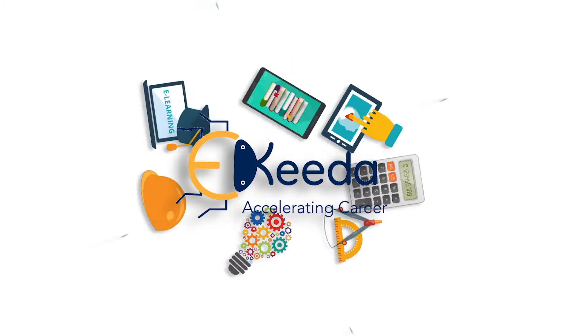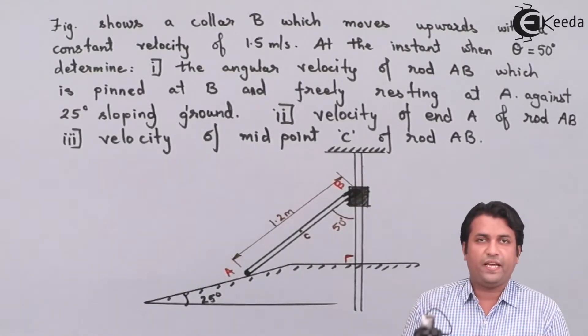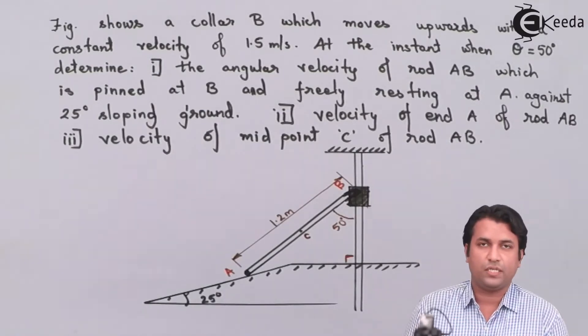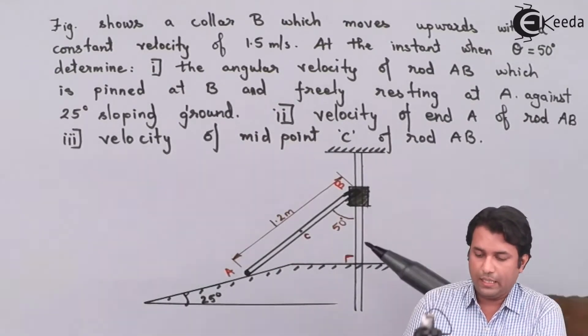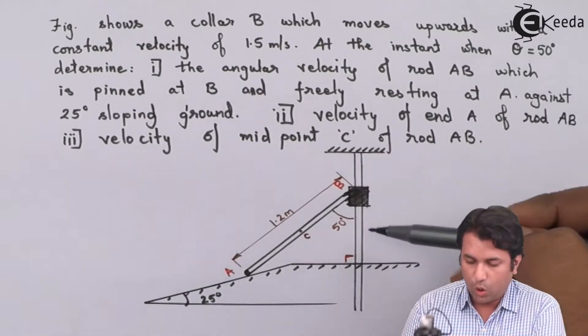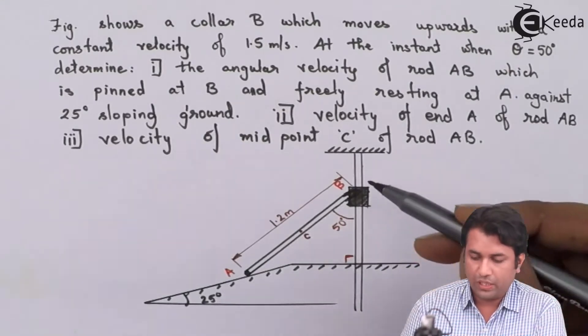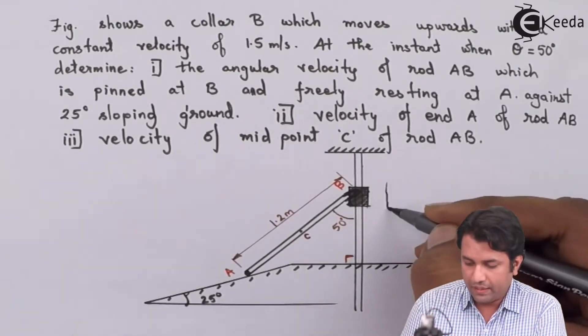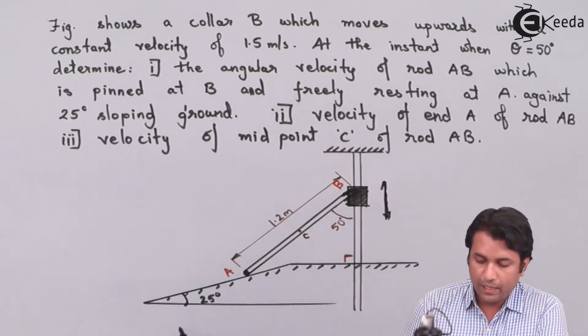Hello students, in this video session we will see the next example in kinematics of rigid bodies using the ICR method. We have to find out the velocities and angular velocities for general plane motion. In this figure, collar B is moving along this vertical post in a to-and-fro, up-and-down motion, which causes rod AB to slide along an inclined surface.